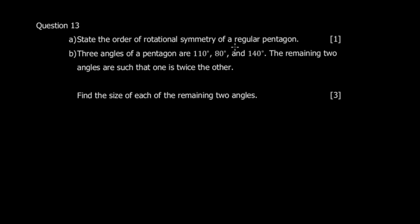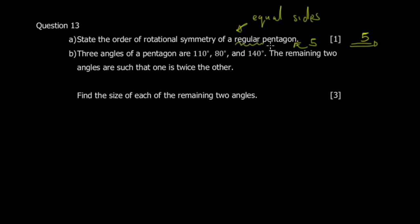Question 13 asks for the order of rotational symmetry of a regular pentagon. The buzzword is 'regular,' meaning equal sides and equal angles. Pentagon means five sides — like the five-sided building. For a regular polygon, the order of rotational symmetry equals the number of sides. So for a regular pentagon it's 5, a heptagon would be 7, a decagon 10, an equilateral triangle 3. This also applies to lines of symmetry for regular polygons.